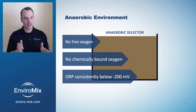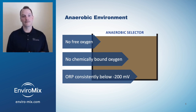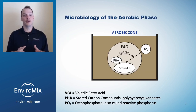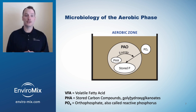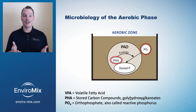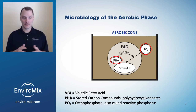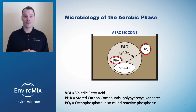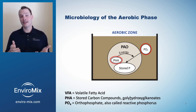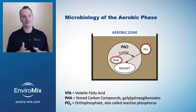After passing through a truly anaerobic selector, the activated sludge enters an aerobic zone. In the aerobic zone, PAOs use their carbon reserves as an energy source for phosphorus uptake and new cell growth. Phosphorus uptake in the aerobic environment is significantly greater than phosphorus release in the anaerobic environment, and that means there's a net removal of soluble phosphorus after the activated sludge passes through this aerobic zone.